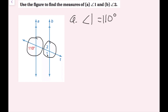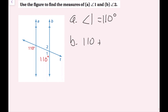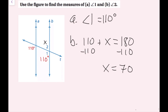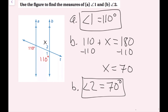Angles one and two are on the same straight line, so they are supplementary and add up to 180 degrees. I write the equation: 110 plus x equals 180. Subtracting 110 from both sides gives x equals 70. So angle two equals 70 degrees. We found both missing angles using corresponding angles and supplementary angles.